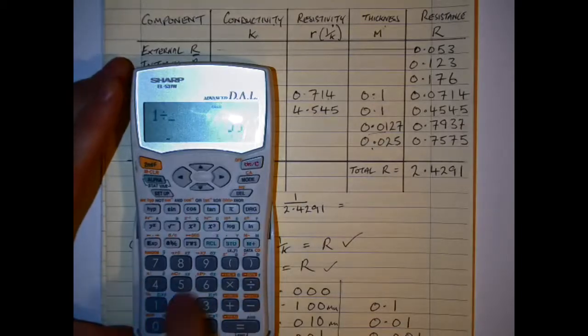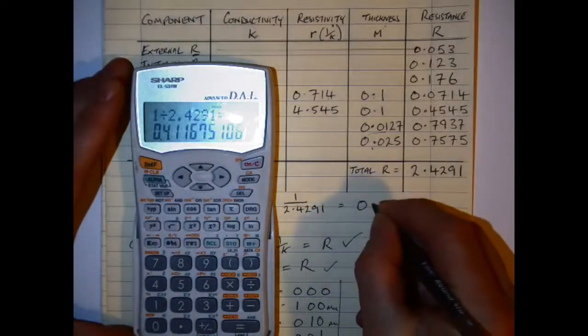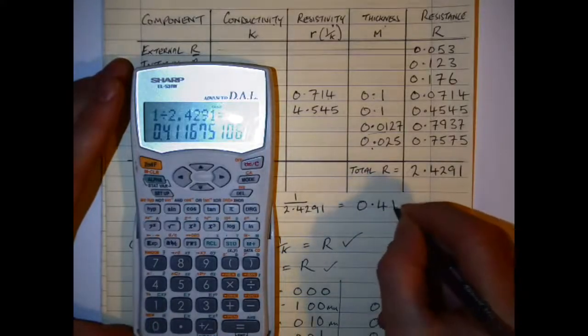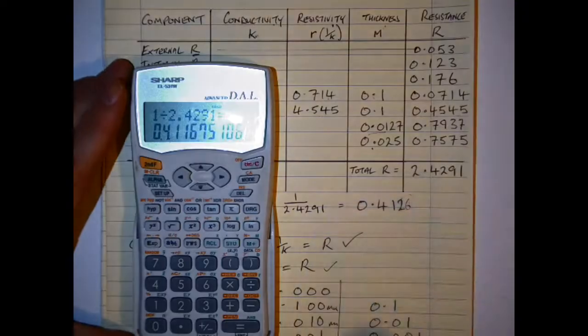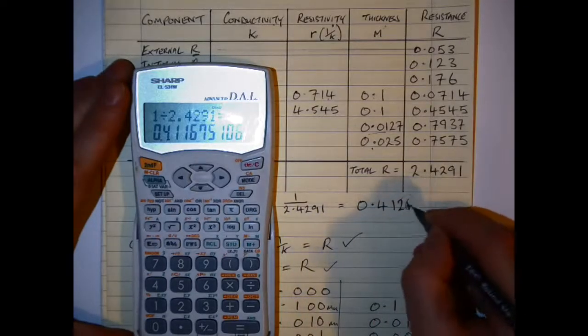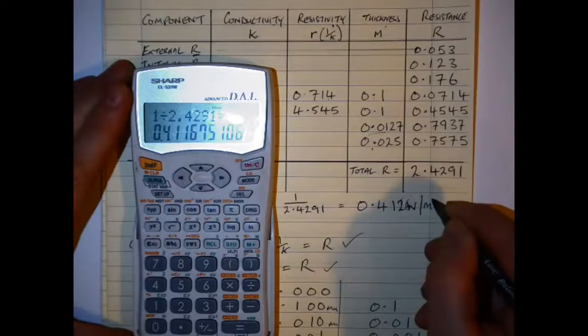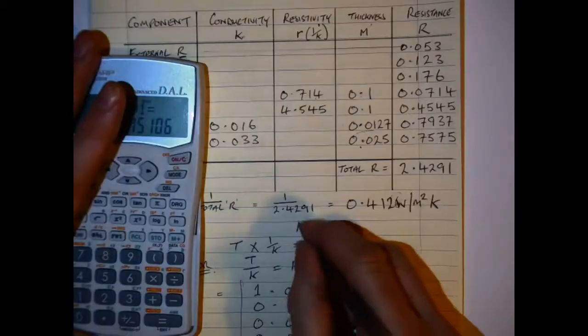And just to keep it to three decimal places, what I'm going to do is I'm going to round it, that's what I'm showing here. When I have that done, the value or the unit that I should put in here is watts per meter squared kelvin.